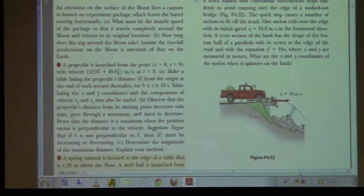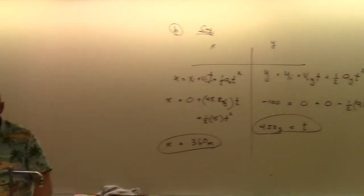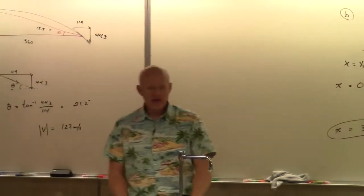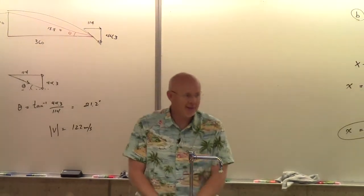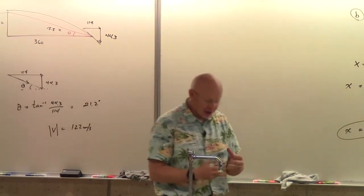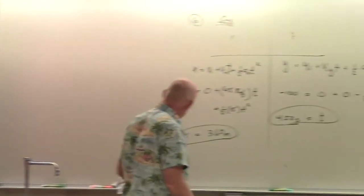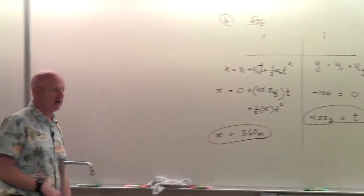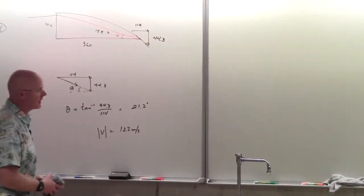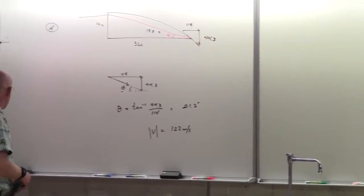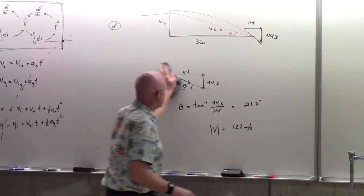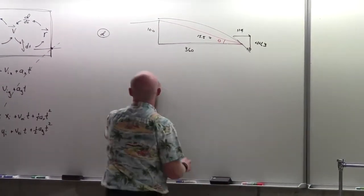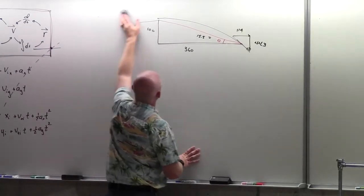At some point — not to bore you — I hope these examples begin to look the same. Isn't it just the same thing over and over: describing position and putting it into these equations? Sometimes we'll have constant acceleration, sometimes we won't, but there's just a horizontal motion and a vertical motion.